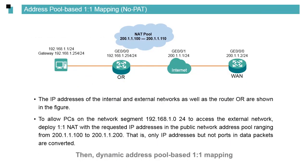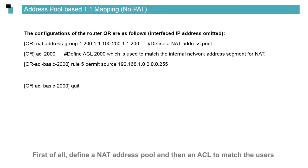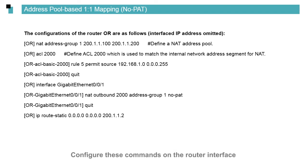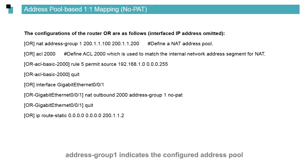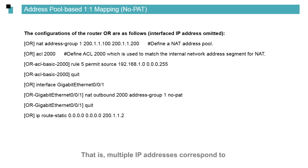For dynamic address pool-based one-to-one mapping, the IP address pool includes addresses from 200.1.1.100 to 200.1.1.110. First, define a NAT address pool, then define an ACL to match the users allowed to use NAT for external network access. Then associate the ACL with the address pool. Configure these commands on the router interface connecting to the external network. Here, 2000 indicates the ACL number, and the address group indicates the configured address pool. NOPAT indicates 1-to-1 NAT — one private IP address corresponds to one public IP address. If NOPAT is not entered, many-to-one NAT is used, where multiple IP addresses correspond to different port numbers of the same public IP address.